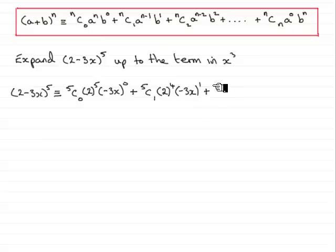Next term will be 5c2. Then, reduce the power on the 2. So, that's 2 to the power of 3. Increase the power on the other term. Minus 3x now goes up to the power of 2. Now, this is an x squared term, you can see. And we've been asked to go up as far as the x cubed term. So, we've got one more term to go.